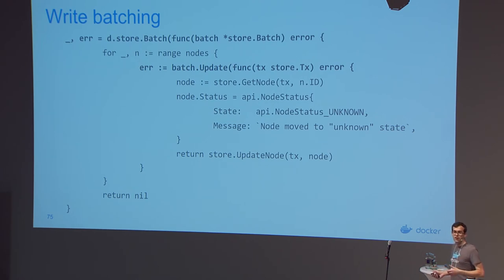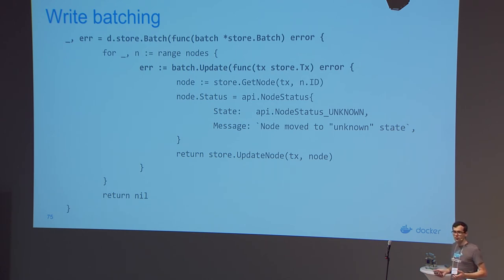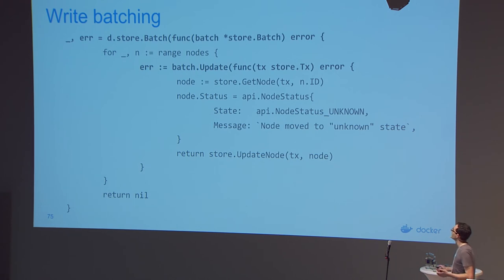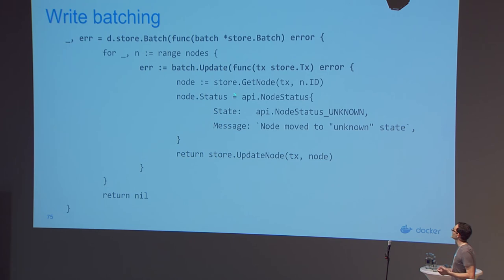Here's an example from our dispatcher. Earlier, Andrea was talking about how when leaders take over from an old one, they don't have the latest heartbeat timestamps. So they put nodes in an unknown state and wait for heartbeats to figure out if nodes are dead or alive. This paraphrased code just loops over the nodes it knows, retrieves the latest version of each one from the store, and sets their status to unknown.